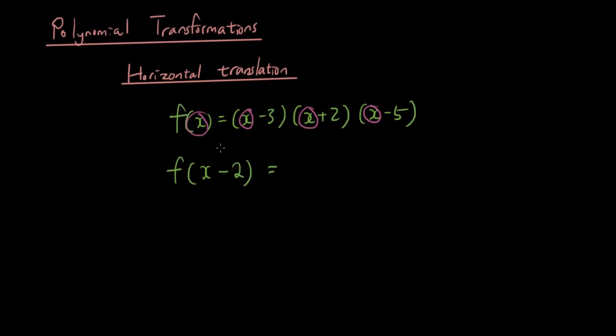If I replace x with x minus 2, then what's going to happen is the equation is going to become x minus 2 minus 3, x minus 2 plus 2, x minus 2 minus 5. So if I simplify this equation, then it's going to become x minus 5 times x times x minus 7.